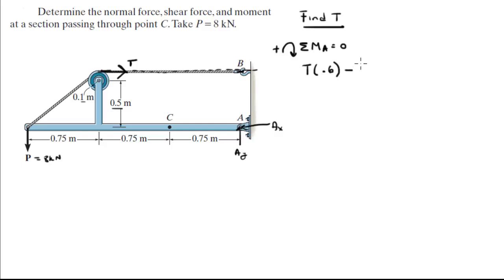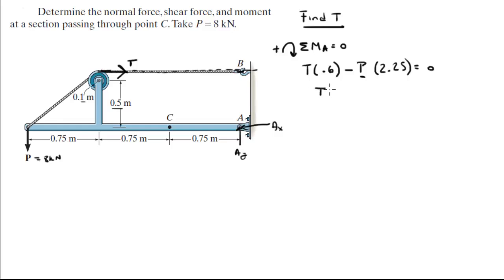Minus the moment created by P, which is P times the distance from P to A, which is 0.75 times 3, giving 2.25 — and that is equal to 0. So when you solve for T, with P already at 8 kN, you get that T is equal to 30 kN.